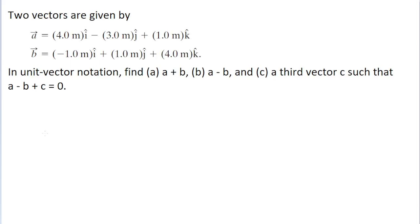In this problem, we're given two vectors a and b, each in terms of the unit vectors i, j, and k, and we're given a few different parts of the problem that ask us to do some arithmetic with these two vectors.